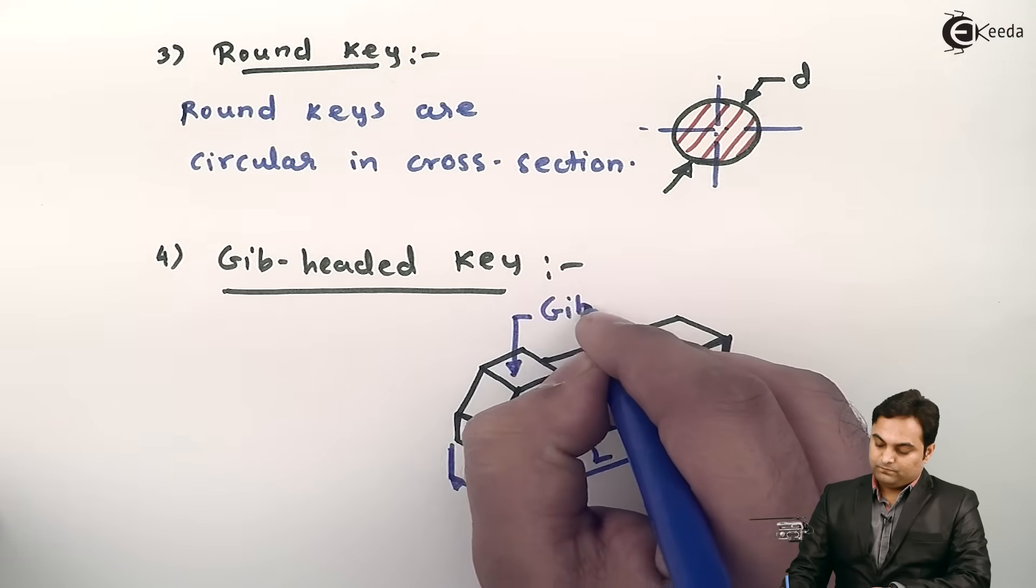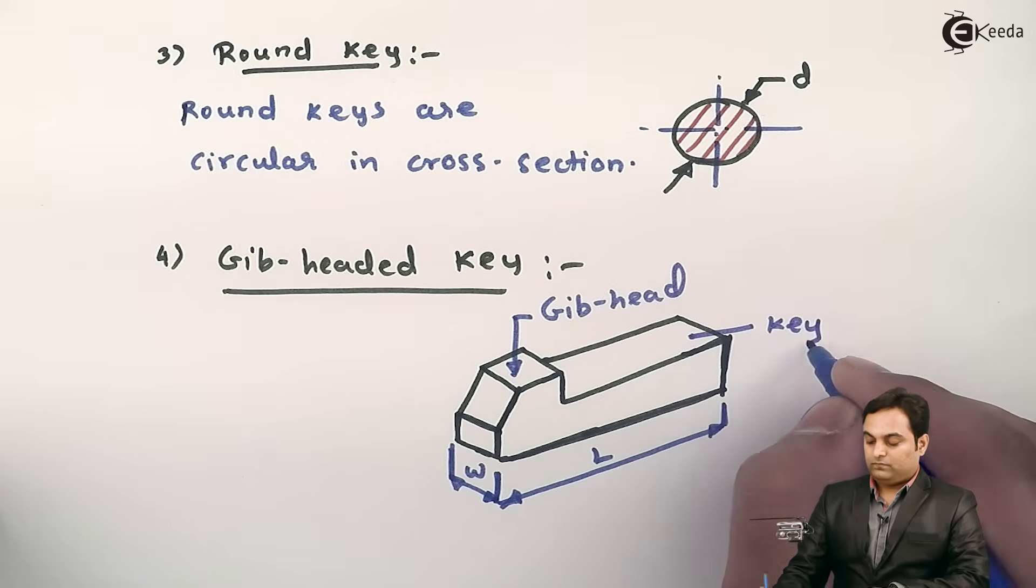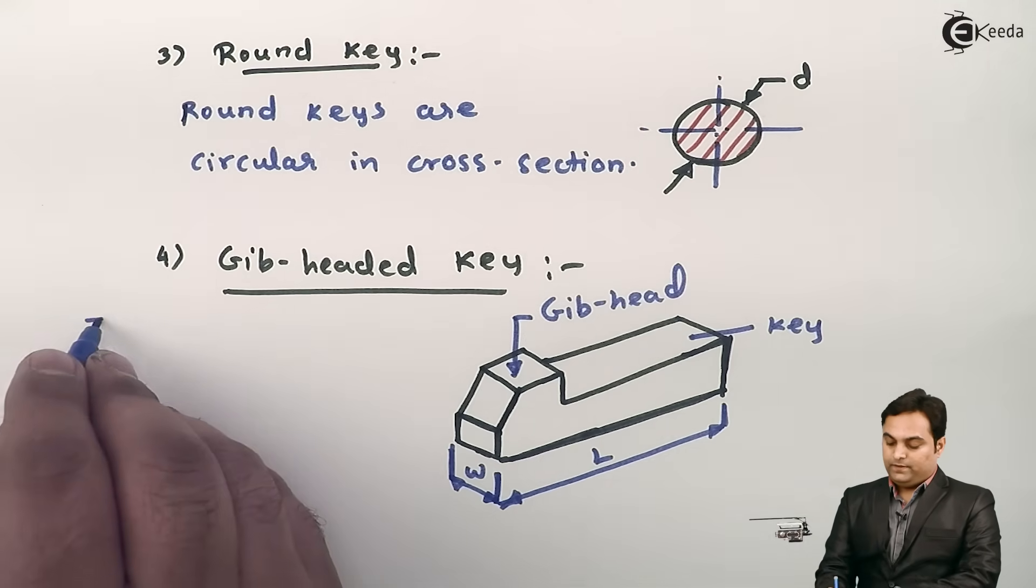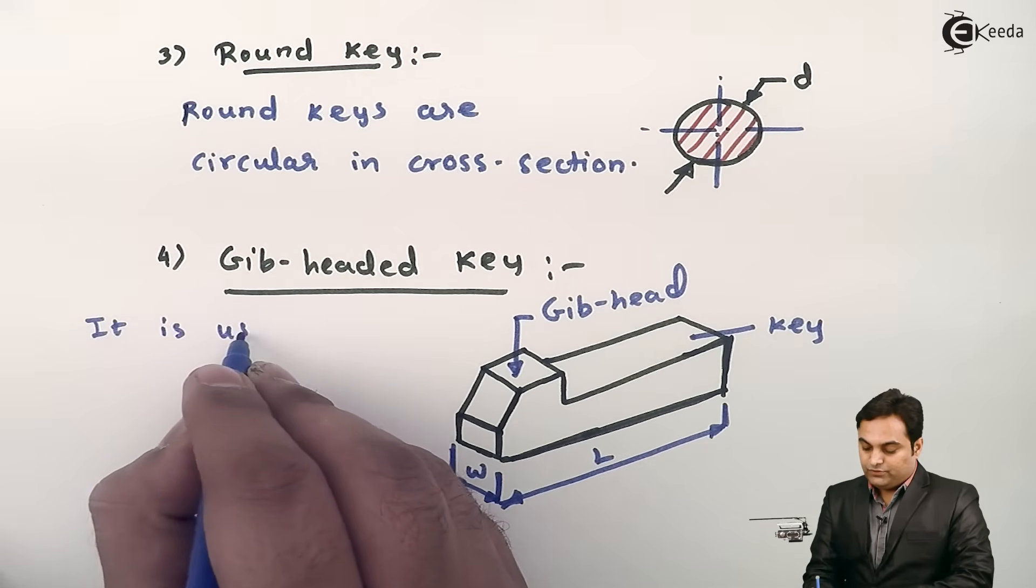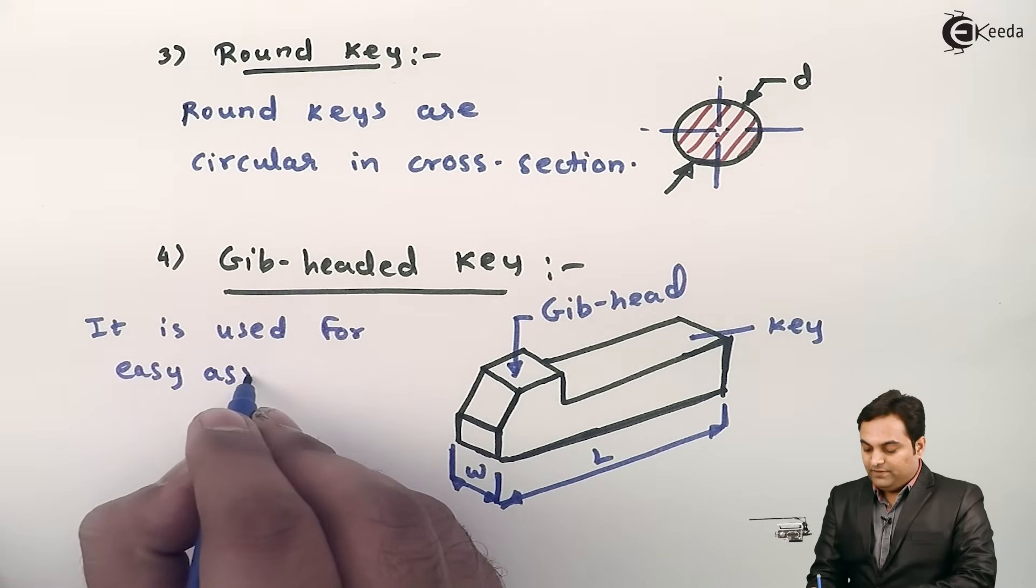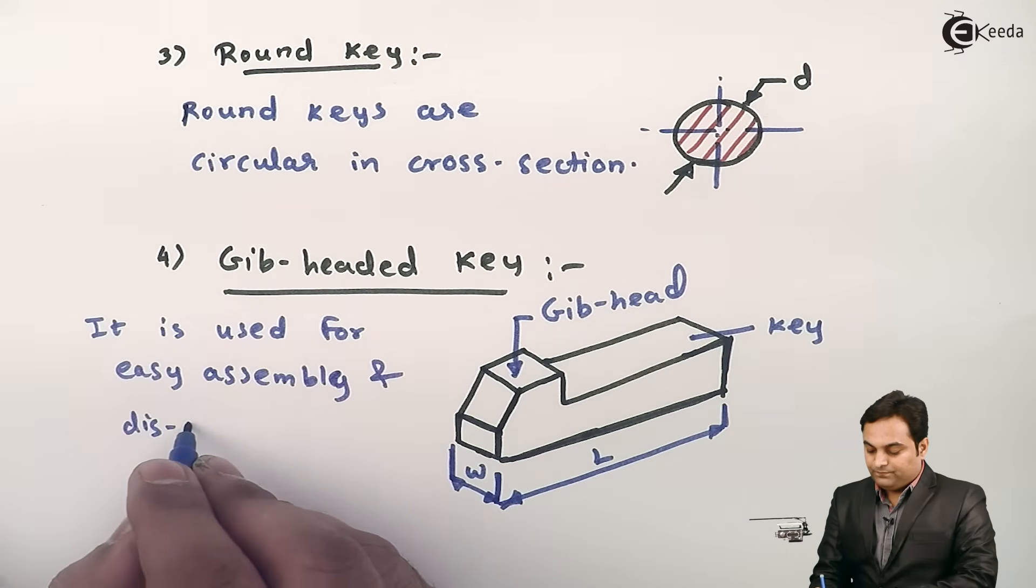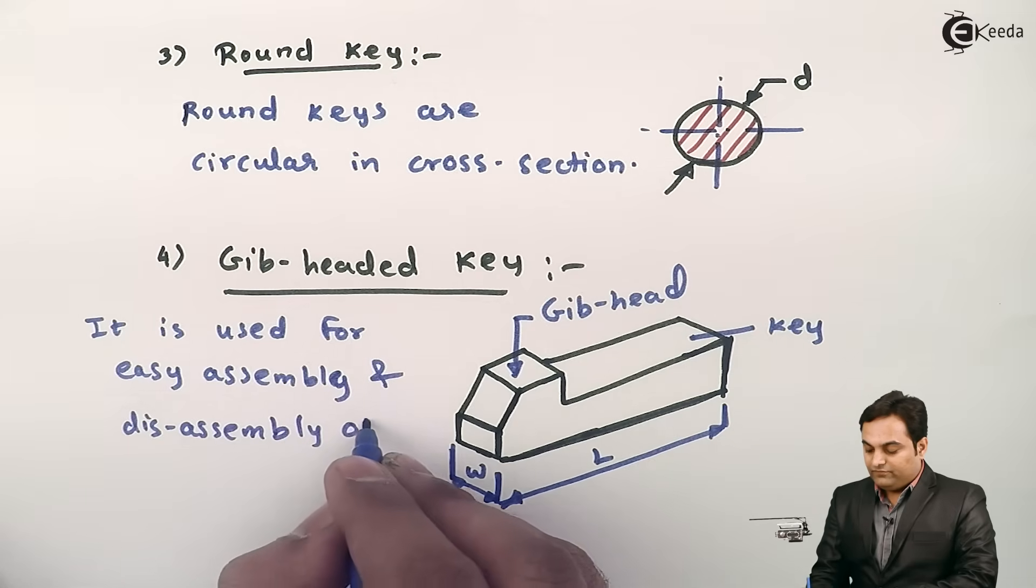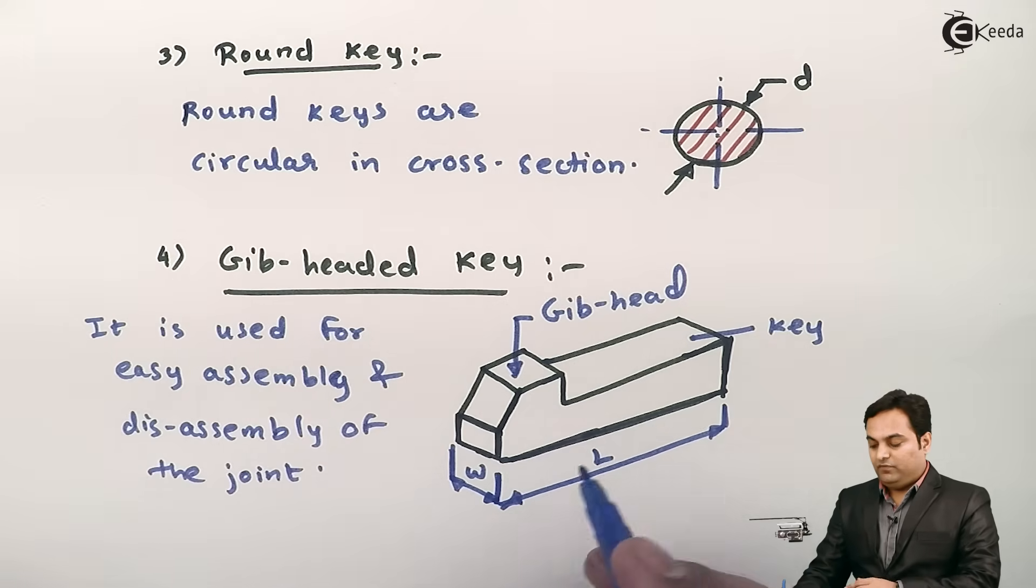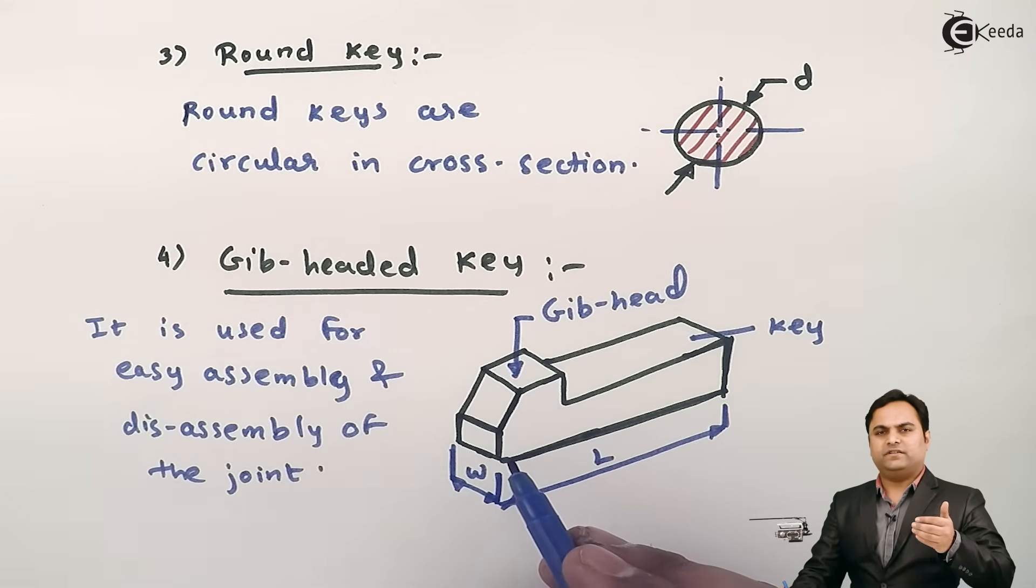So this special construction, this portion, it is called as the gib head and this is the key. So this gib-headed key is used for easy assembly and disassembly of the joint. So whenever we want to assemble and disassemble the key very quickly, we have this gib head so we can pull this gib head, and at the same time when we are assembling we can just push it.